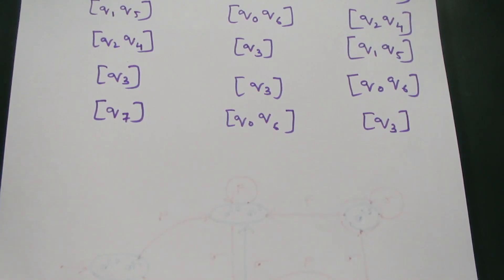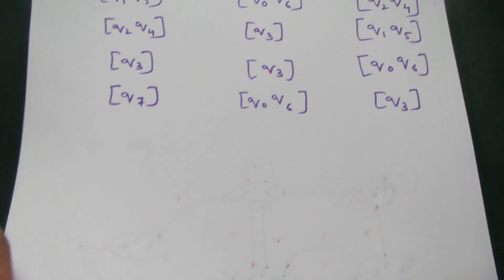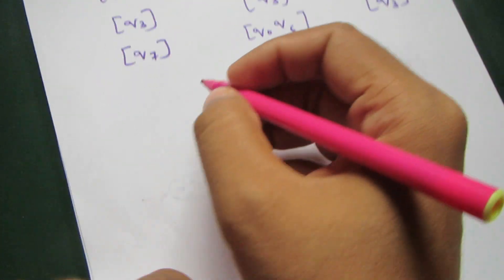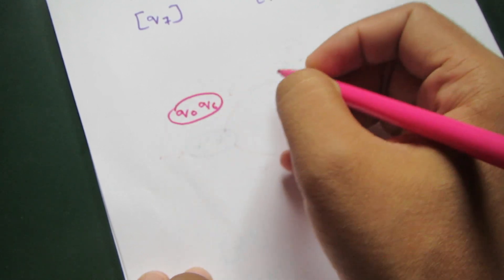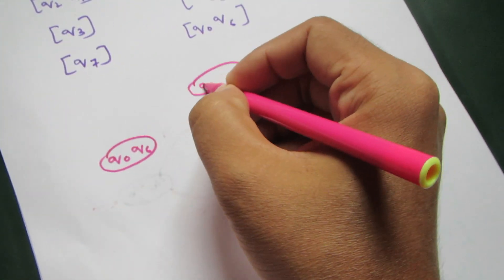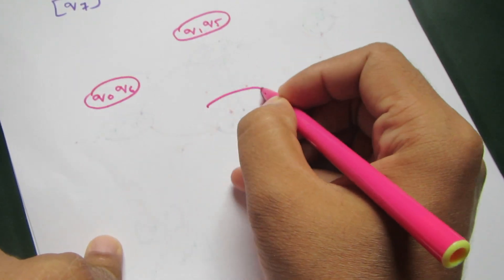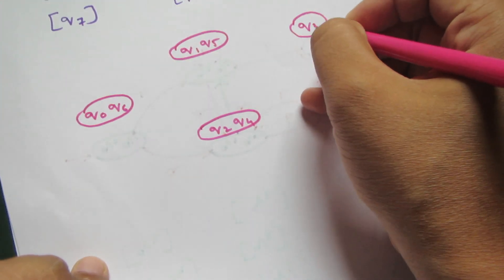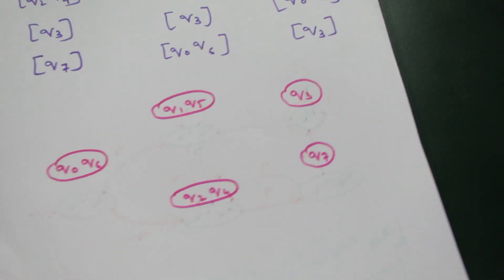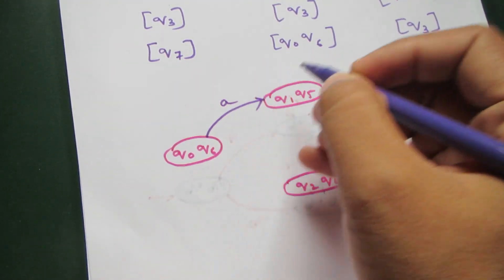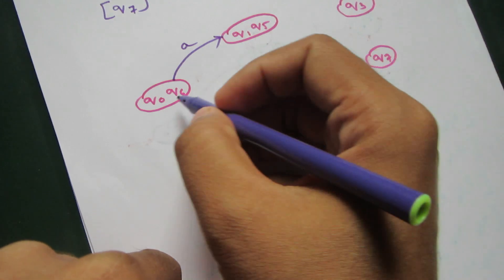Now we will draw the diagram. The first state is the initial state. Let's write the states first: q0 q6, q1 q5, q2 q4, q3, and q7. Now q0 q6 goes to q1 q5 on input a, and to q0 q6 itself on input b.